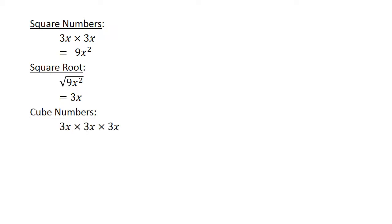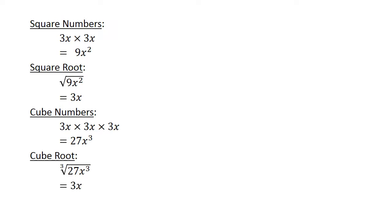Cube numbers: 3x times 3x times 3x equals 27x to the power of 3. Cube root: the cube root of 27x to the power of 3 equals 3x.